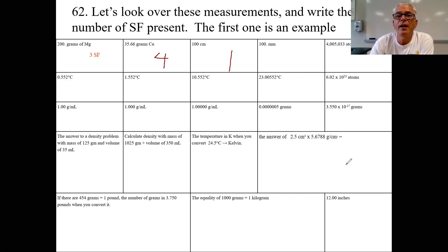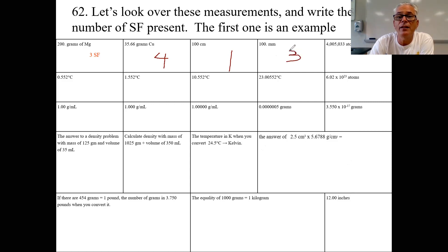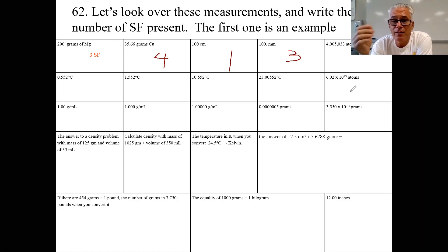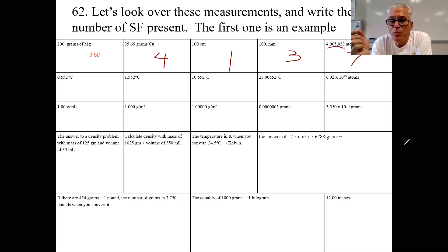100. millimeters with the written decimal point — that makes the last zero significant, and the one in the middle is between significant figures, so we get three significant figures. Next: 4,005,033 atoms. All seven of those digits are significant figures, because the zeros in the middle are all between significant figures.